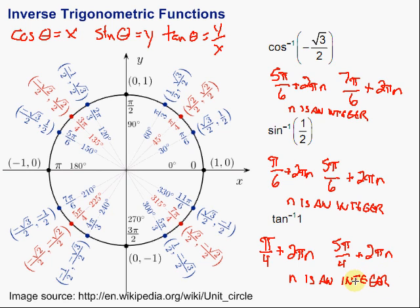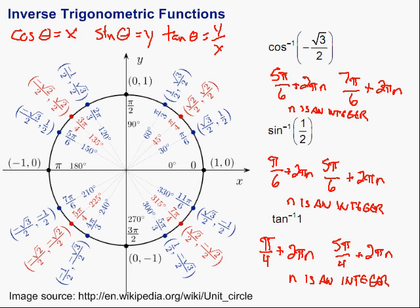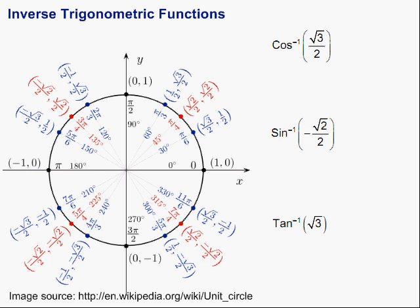Now, this is not a function because there are all those different potential values. So in order for it to be a function, what we have to do is restrict where we're going to look on the unit circle. We tell the difference because now we have capital letters on our cosine, sine, and tangent. That restricts us to particular areas.